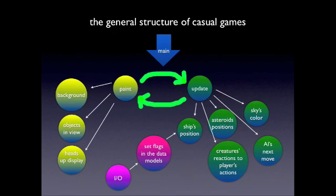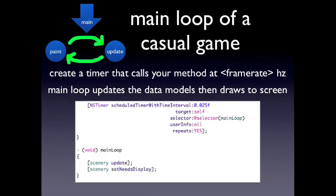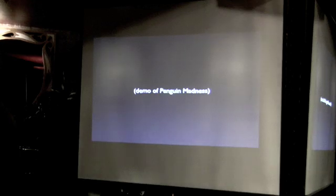You update the data and then you draw it to screen. Update the data, draw it to screen. Here's a little tiny bit of code that's just the most simple illustration of this, and this is in Objective-C. So you create a timer. Right now I have this firing at 25 milliseconds, and it calls this function main loop that updates the data structures and then paints to the screen just over and over.